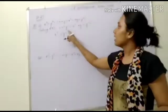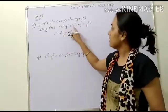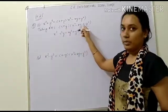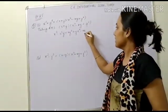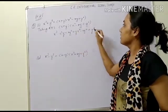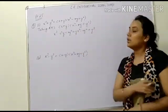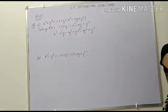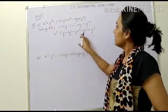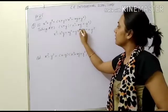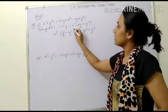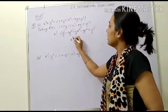Plus y into the complete term: y into x squared gives x squared y, y into minus xy gives minus xy squared, and y into y squared gives y cubed. Now cancel: x squared y minus x squared y cancel, and xy squared minus xy squared cancel.